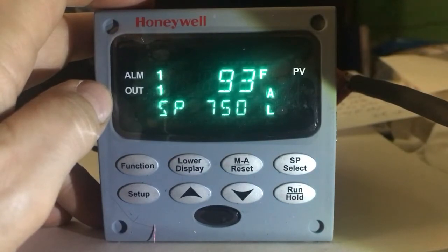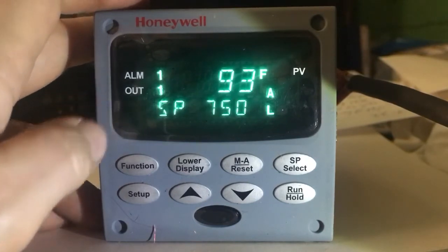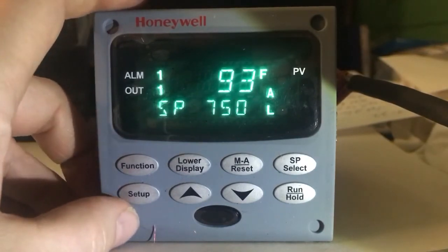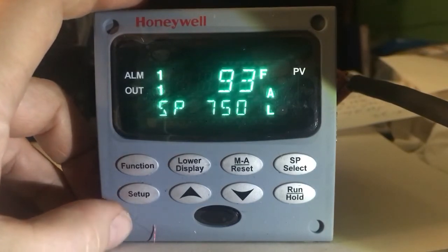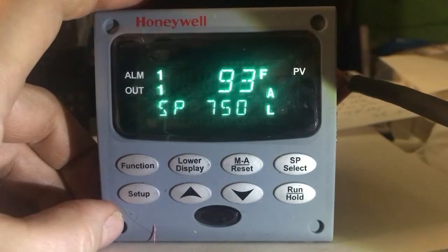That's how you would change that temperature parameter where your upper chamber would start away from the lower chamber. There are some little tricks about programming the UDC 2500. That's why we usually program them before we send them out to customers.